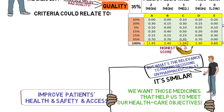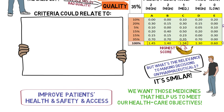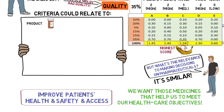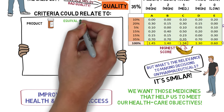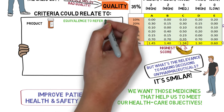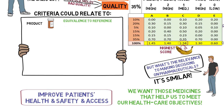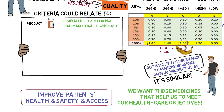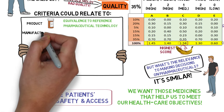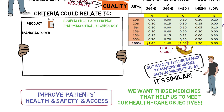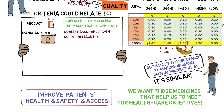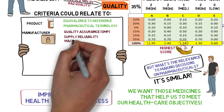The evaluation criteria could be relating to the product, such as the proof for bioequivalence or the formulation of the packaging. The manufacturer: are they GMP certified? What's their supplier reliability track record? Or do they invest locally?